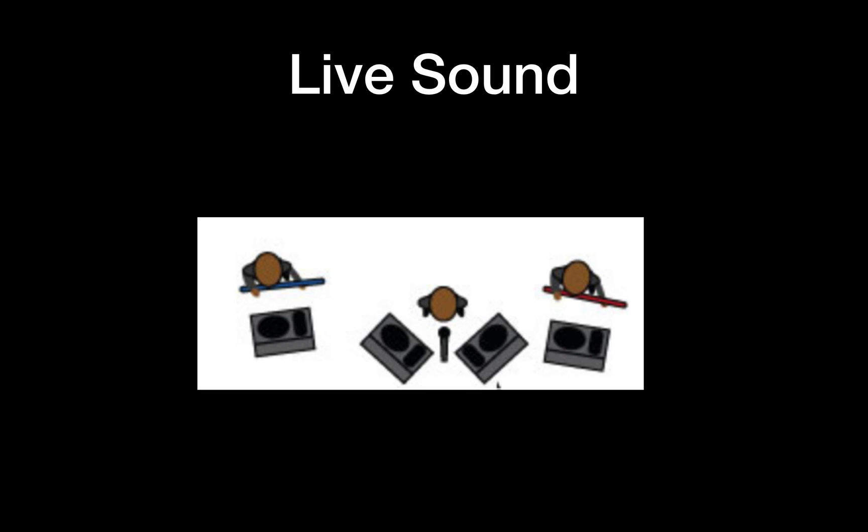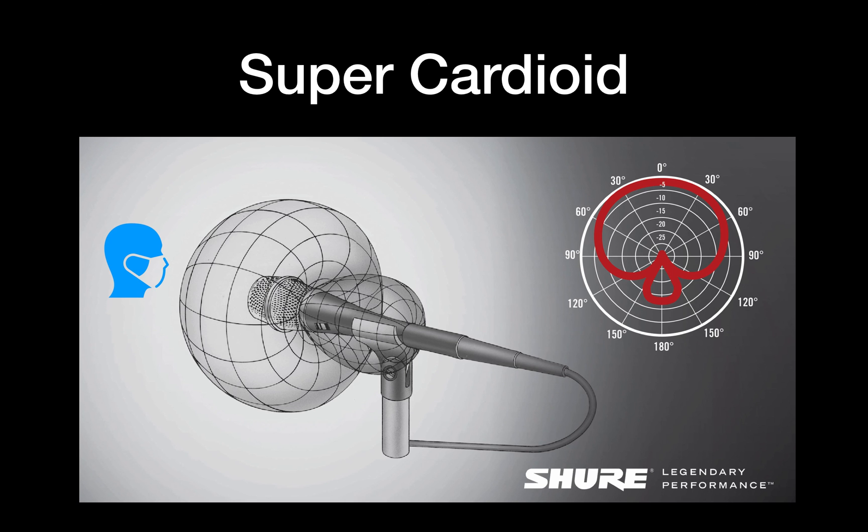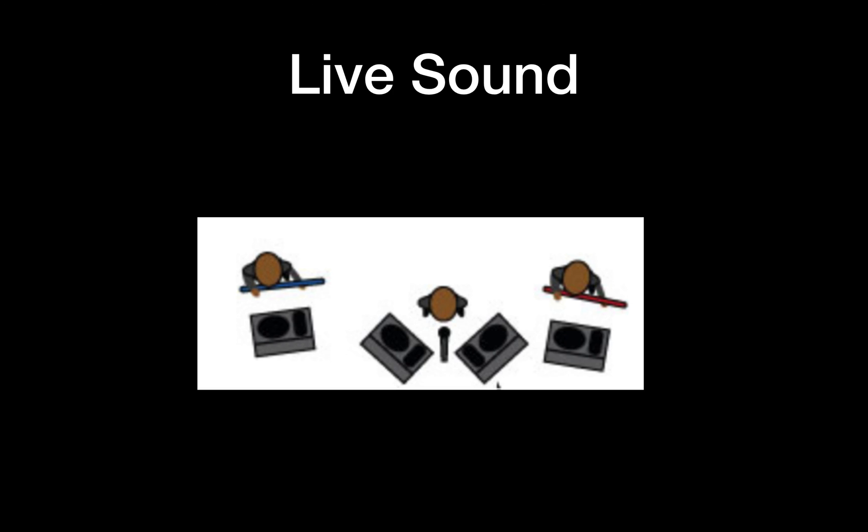If this was a cardioid mic, because it doesn't reject sounds from the sides too much. However, with a super cardioid, it will reject more sound from the left and the right, but it will accept some sound from the back of the microphone. Which is why the monitors are positioned not directly in front of the singer, but sideways at an angle, at the 150 degrees null points that we had in this diagram here. That's microphone polar patterns.